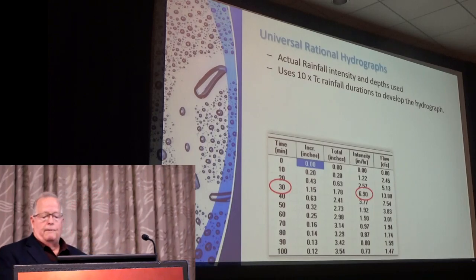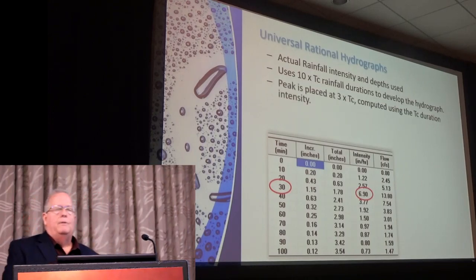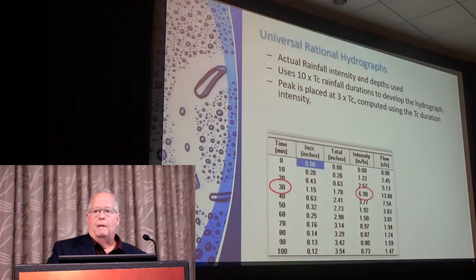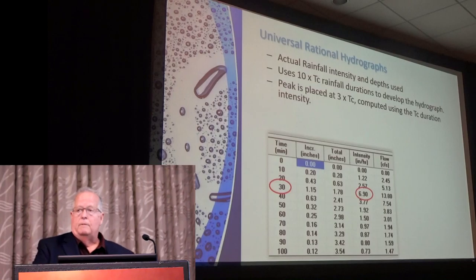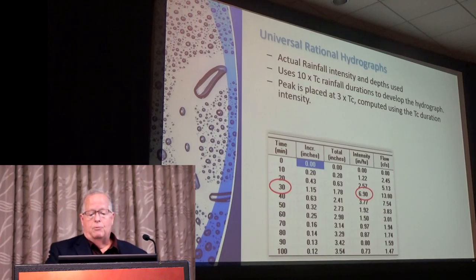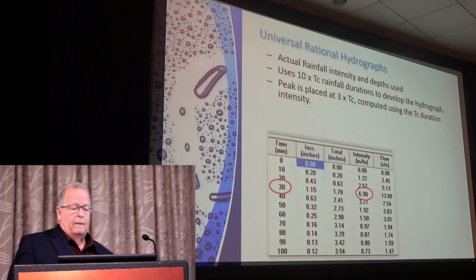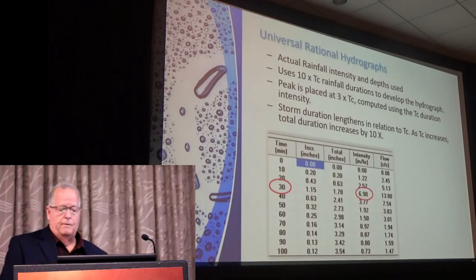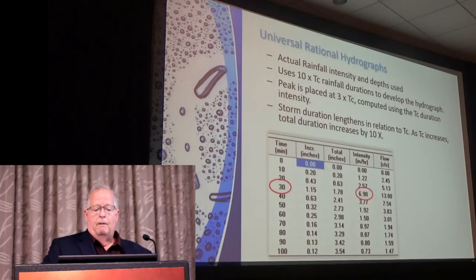The peak was placed at 3 times the TC primarily to mimic what the SCS method does, putting about one-third of the volume of the hydrograph before the peak and the remaining two-thirds after the peak. Some methods put the peak right in the middle — that doesn't make much difference when designing a detention basin. The hydrograph also lengthens due to the TC increments of 10 times, giving a conservative approach.